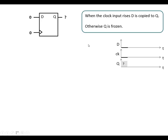Here's the symbol for the D flip-flop. We've got a D input and a Q output, and we've also got the clock input which is denoted by this triangle. The characteristic written in the box says: when the clock input rises, D is copied to Q; otherwise Q is frozen. Let's just demonstrate that.